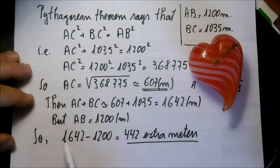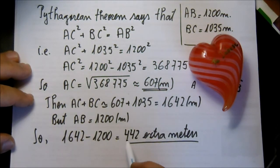So 1,642 minus 1,200 equals 442 extra meters.